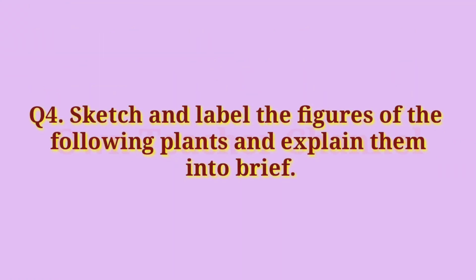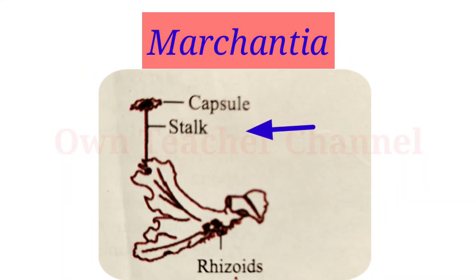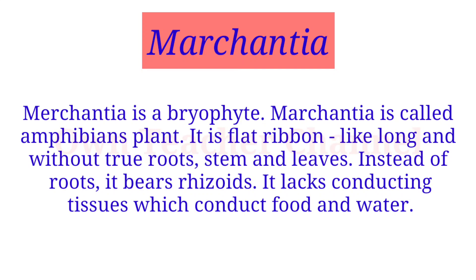Question four: Sketch and label the figures of the following plants and explain them briefly. Marchantia — labels: capsule, stalk, rhizoids. Marchantia is a bryophyte, also called an amphibian plant. It is flat, ribbon-like, long, and without true roots, stem, and leaves. Instead of roots, it bears rhizoids. It lacks conducting tissues which conduct food and water.